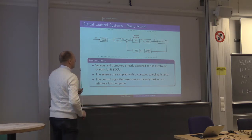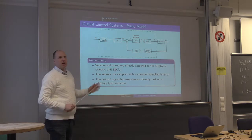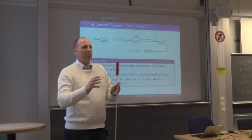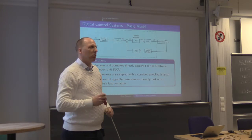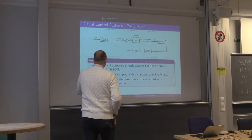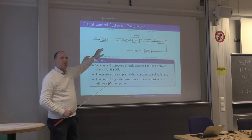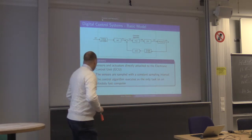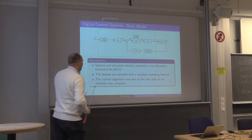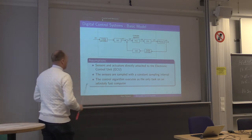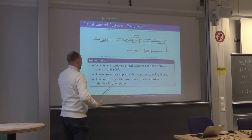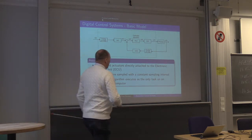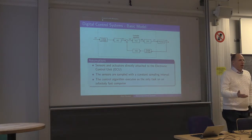Something else that is interesting: in a car you can have hundreds of different ECUs, and every ECU is running not only a single task but has a real-time operating system and is in charge of running many different control tasks. So you do not only share the communication bus, you also share the processor, which will further introduce delay and jitter. Since the computer is shared, the basic assumption that you have an infinitely fast computer does not hold either.